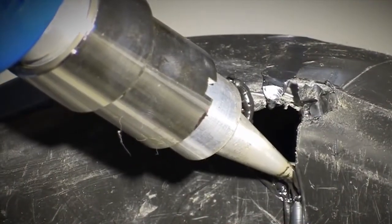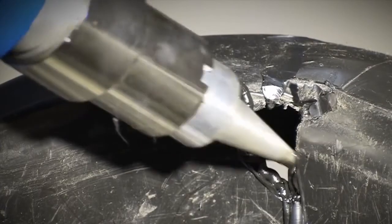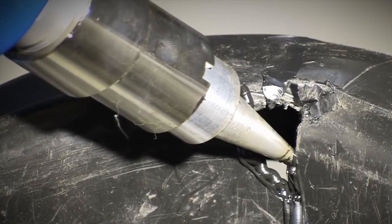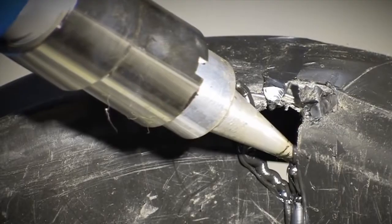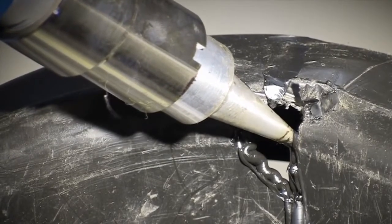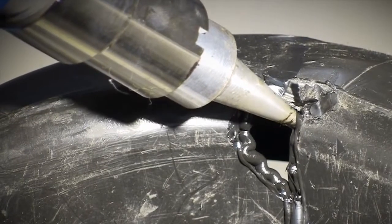The trick to making effective plastic patches with the InjectiWeld is to make sure the tip comes into contact with at least some part of the parent material. Remember, one has to achieve a melt in order to get a high quality weld.